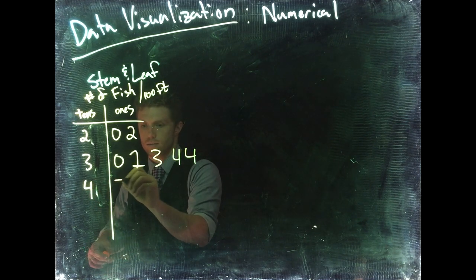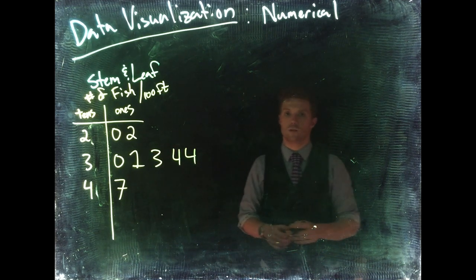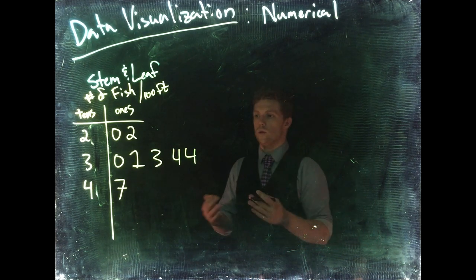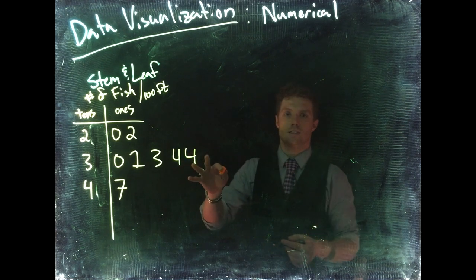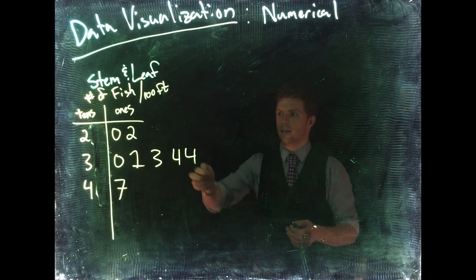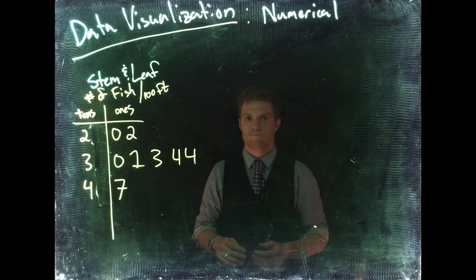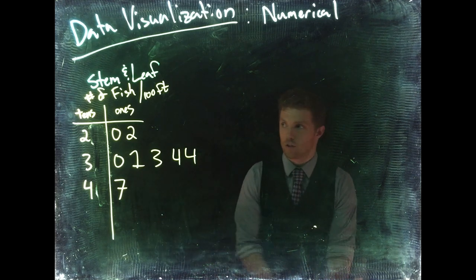Then we saw once 22, 30, 30. So here in the stem-and-leaf we're able to see the distribution of our data. The problem with this is that if you get a lot of data, it's really hard to show the exact numbers for every single observation.